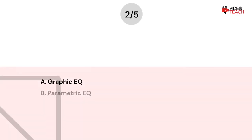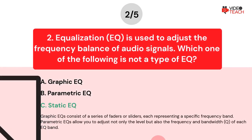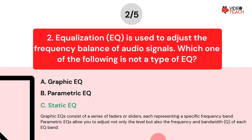The correct answer is Option C. Graphic EQs consist of a series of faders or sliders, each representing a specific frequency band. You can raise or lower the level of each band to adjust the overall frequency balance of the audio signal. Parametric EQs allow you to adjust not only the level, but also the frequency and bandwidth of each EQ band, providing more precise control over the shape and character of the EQ curve.